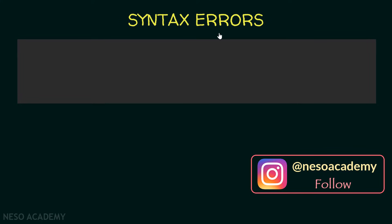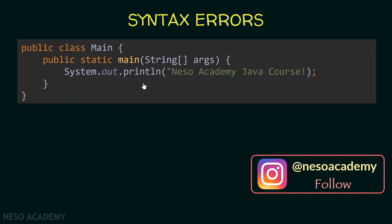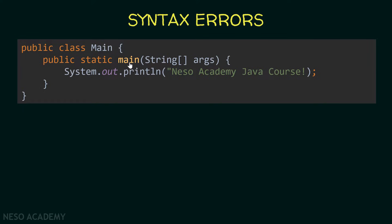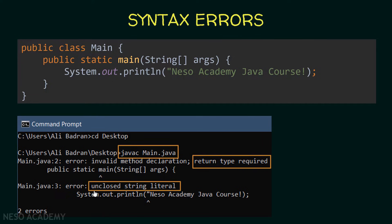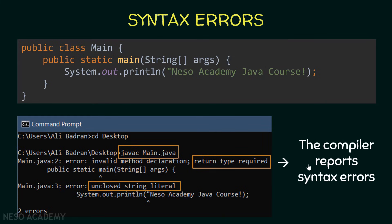Let's start with syntax errors. Have a look at this code. As you can see, we have 'public static main' — the return type of the main method is missing. So if we compile this main.java file, we will get an error saying that the return type is required. Also, notice this string — we put the opening double quote but did not close it, so we get another error: unclosed string literal. The compiler reports syntax errors, so whenever you make errors related to Java syntax, the compiler will help you.